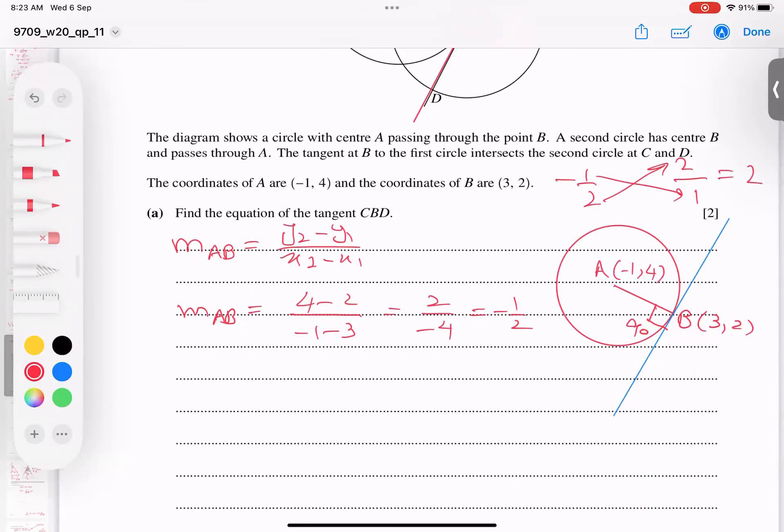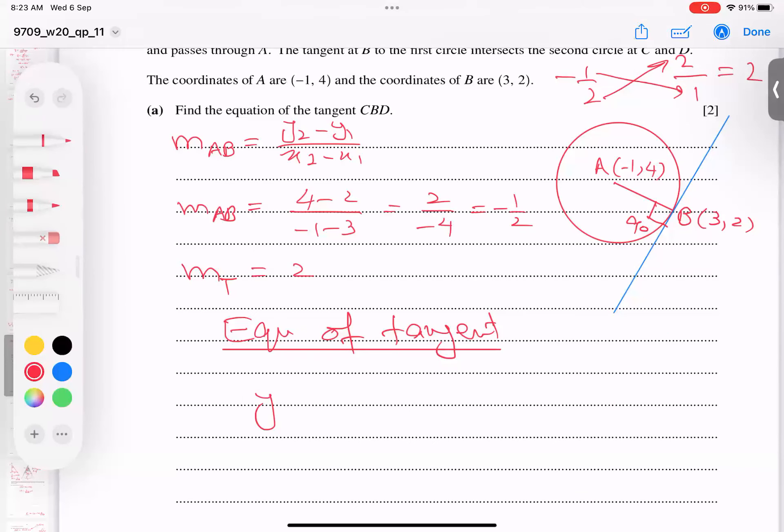It means 2 will go up, 1 will go down. And this minus becomes plus. And 2 by 1 you can write 2. So gradient of T for tangent is 2. Now I'm using this gradient and this coordinate to find out equation of tangent. So equation of tangent which I'm going to find, formula Y minus Y1 equals to M times X minus X1. So Y1 is 2, X1 is 3, and M is 2. And I believe this is very clear.